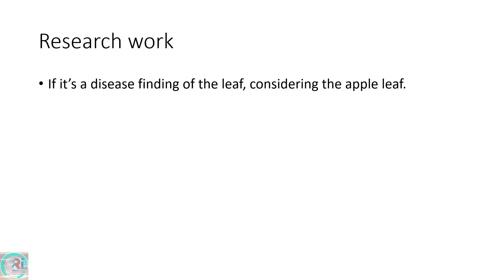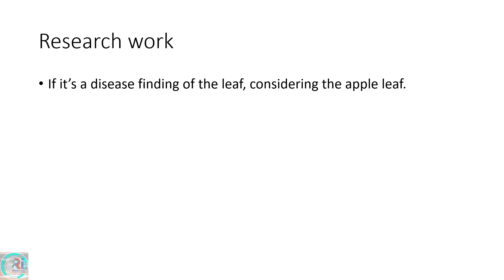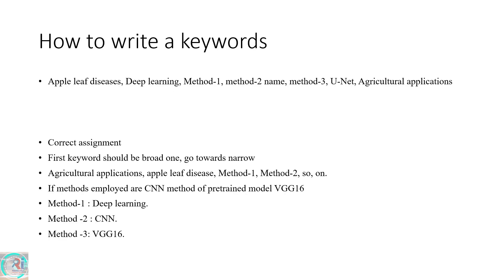Consider if your research work is on finding disease on a leaf - say an apple leaf. How do you write a keyword? After your abstract, you will be writing keywords. A keyword is what gives you citations, because people search based on keywords. If your paper is ranked highly, many people will see your paper, it will be cited by other authors, and your paper will be recognizable.